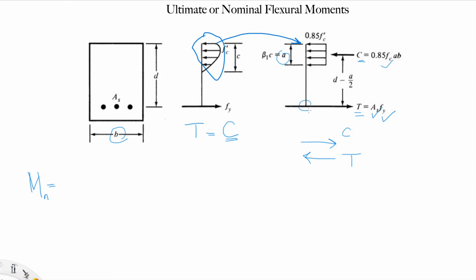If we take the moment around the tension, then it's C multiplied by d minus a over 2. Or because of equilibrium, if you take the moment around C here, it is actually T multiplied by d minus a over 2.